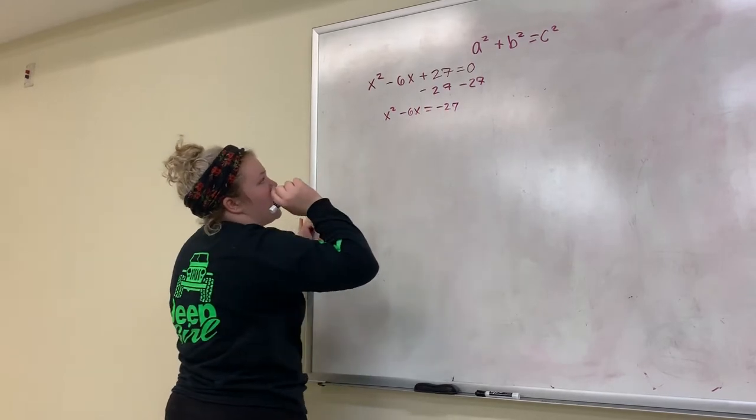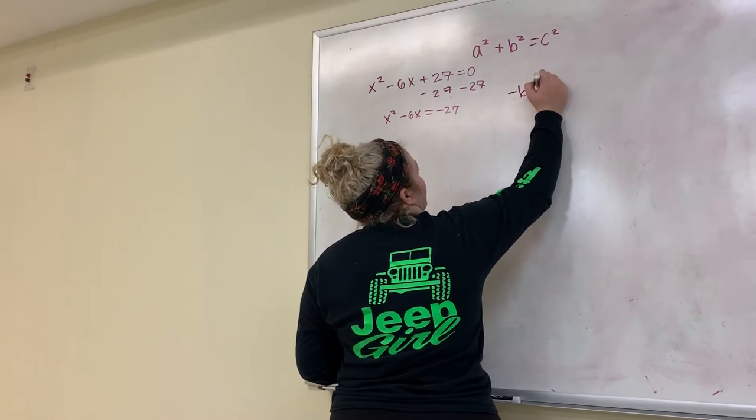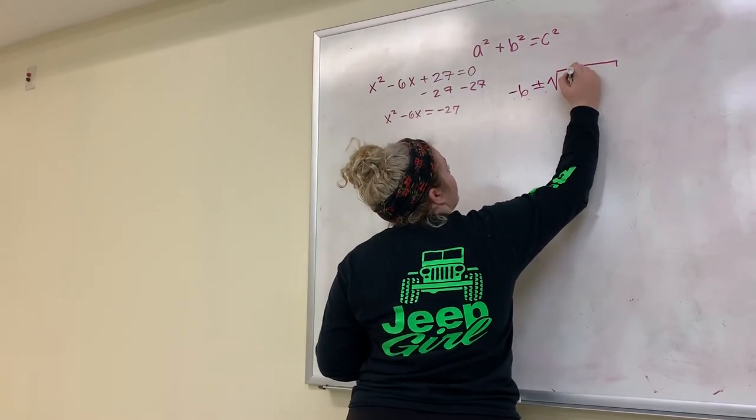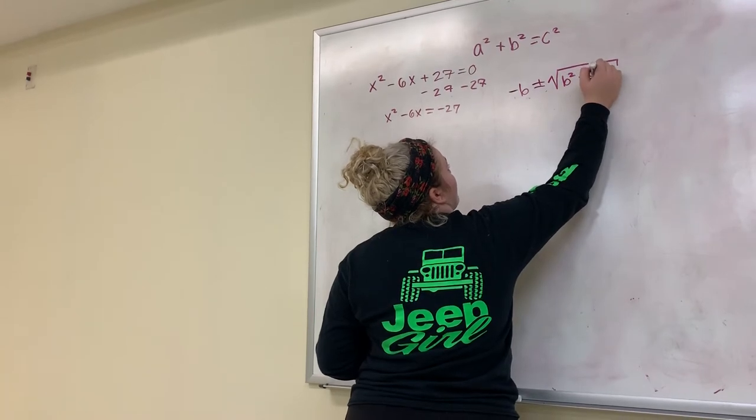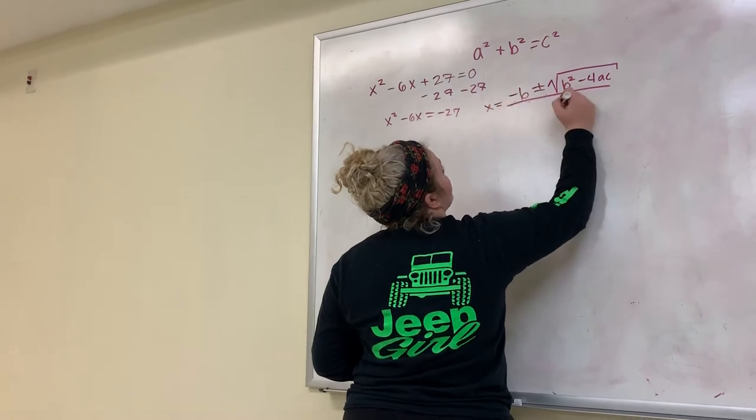Once we have that, I can start using the quadratic formula, which is negative b plus or minus square root of b squared minus 4ac all over 2a.